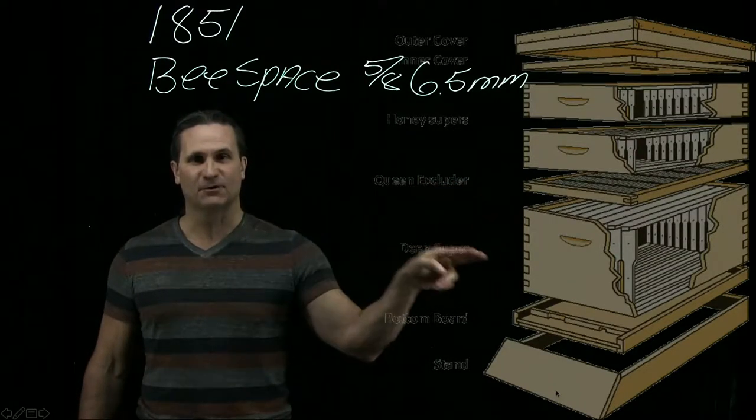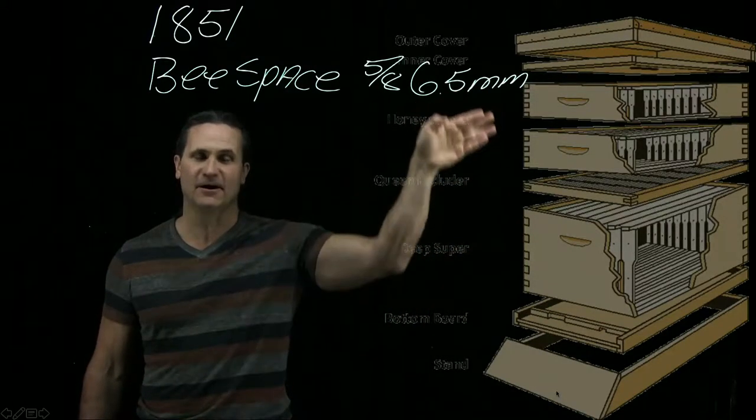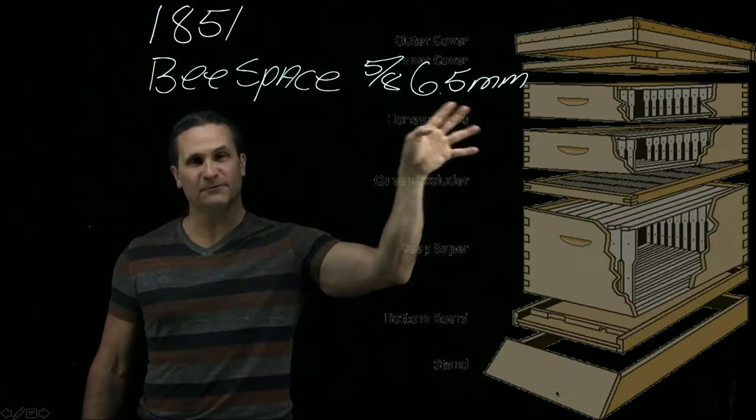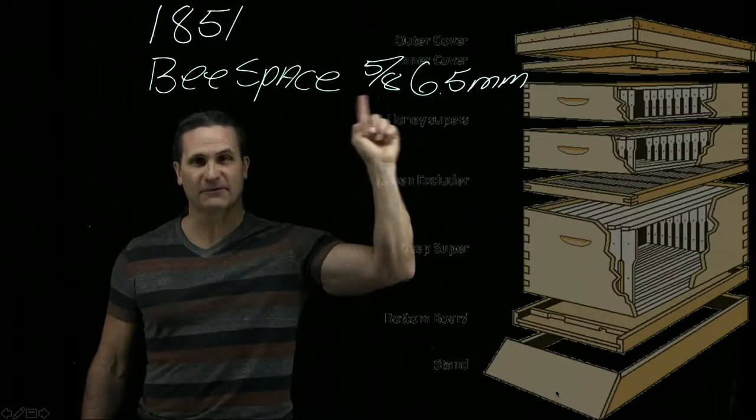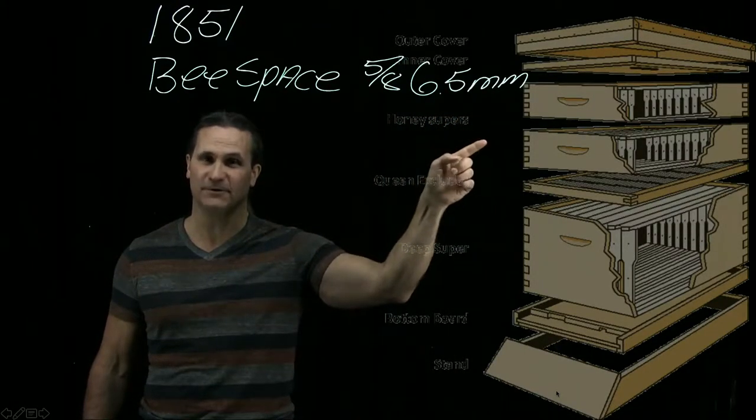Then we add a queen excluder to keep the queen down here. That way she doesn't lay her brood in our honey supers, and that's what these are. These are our honey supers. This is where the bees will make their honey they store through the winter. We can take one of these for ourselves, but remember we have to leave a hundred pounds of honey for the colony to survive the winter.